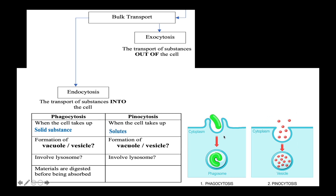The solid substance taken up via phagocytosis will be trapped inside a vacuole — specifically a food vacuole — meanwhile solutes taken up via pinocytosis will be trapped inside a vesicle. Since the solid substances taken up via phagocytosis need to be digested before being absorbed, phagocytosis often will involve the lysosome. However, pinocytosis will not involve the lysosome, because the solutes taken up via pinocytosis will directly be absorbed into the cell.